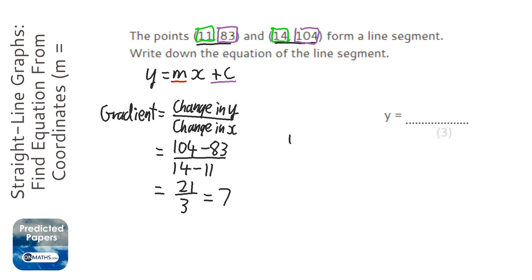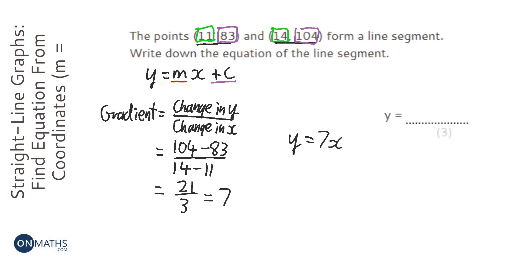So we've done that part. We can write down y equals 7x plus c, because we know the gradient is 7. But we still need to find out what c is.